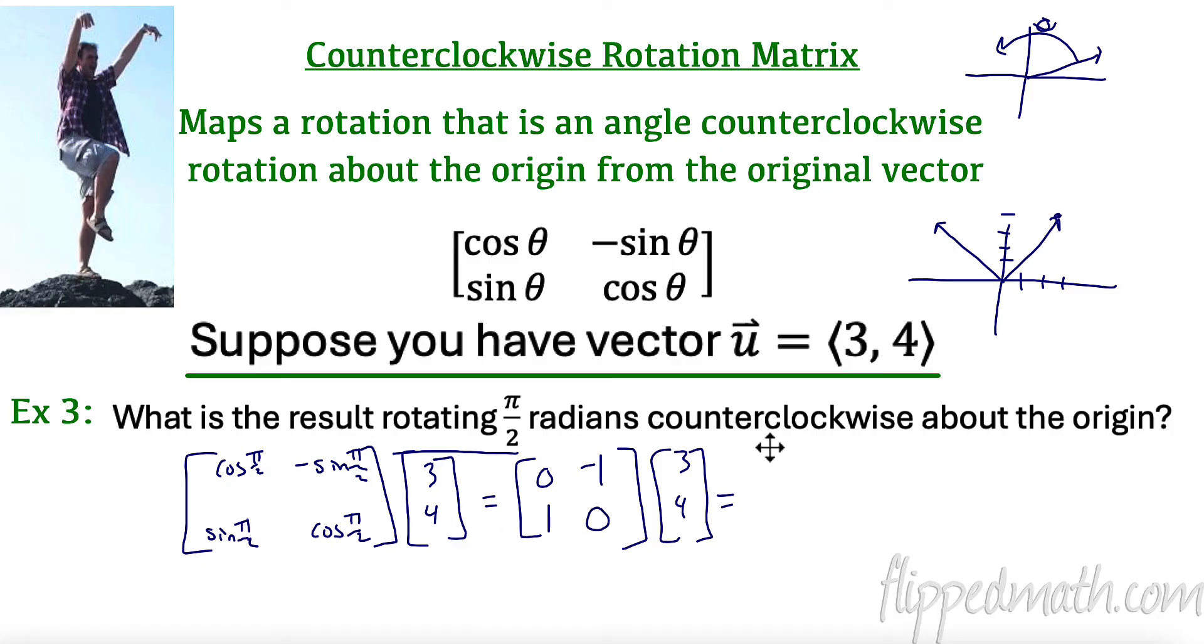So now we are going to multiply these things here. So I have first row, first column. So zero times three is zero. A negative one times four is negative four. Down here, I'm going to have second row, first column. One times three is three. Zero times four is zero. So we end up with negative four comma three.